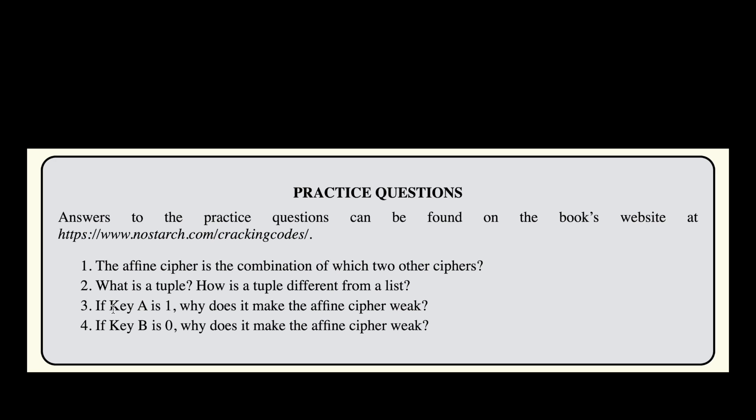The next question: if key A is 1, why does it make the Affine Cipher weak? If key A of our Affine Cipher is set to 1, we are multiplying the index of our original message by 1, and every value multiplied by 1 is the same value — so it is not secure.